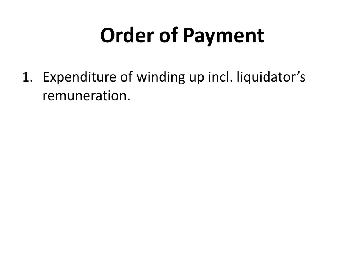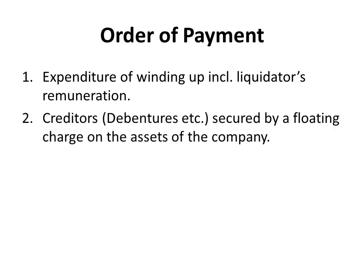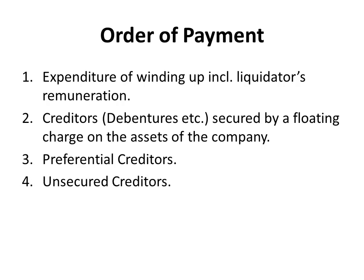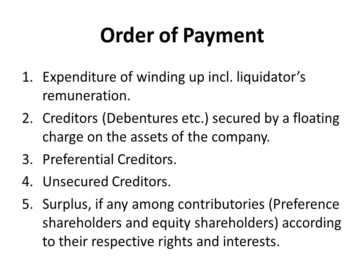Next is the order of payments. In which order must a liquidator distribute the proceeds of assets of a company? First of all, he has to pay the expenditure of winding up, including his own remuneration or the liquidator's remuneration. Thereafter, creditors secured by a floating charge on assets of the company. Thereafter, preferential creditors, then unsecured creditors. And finally, if there is any surplus, it should be distributed among the contributors.